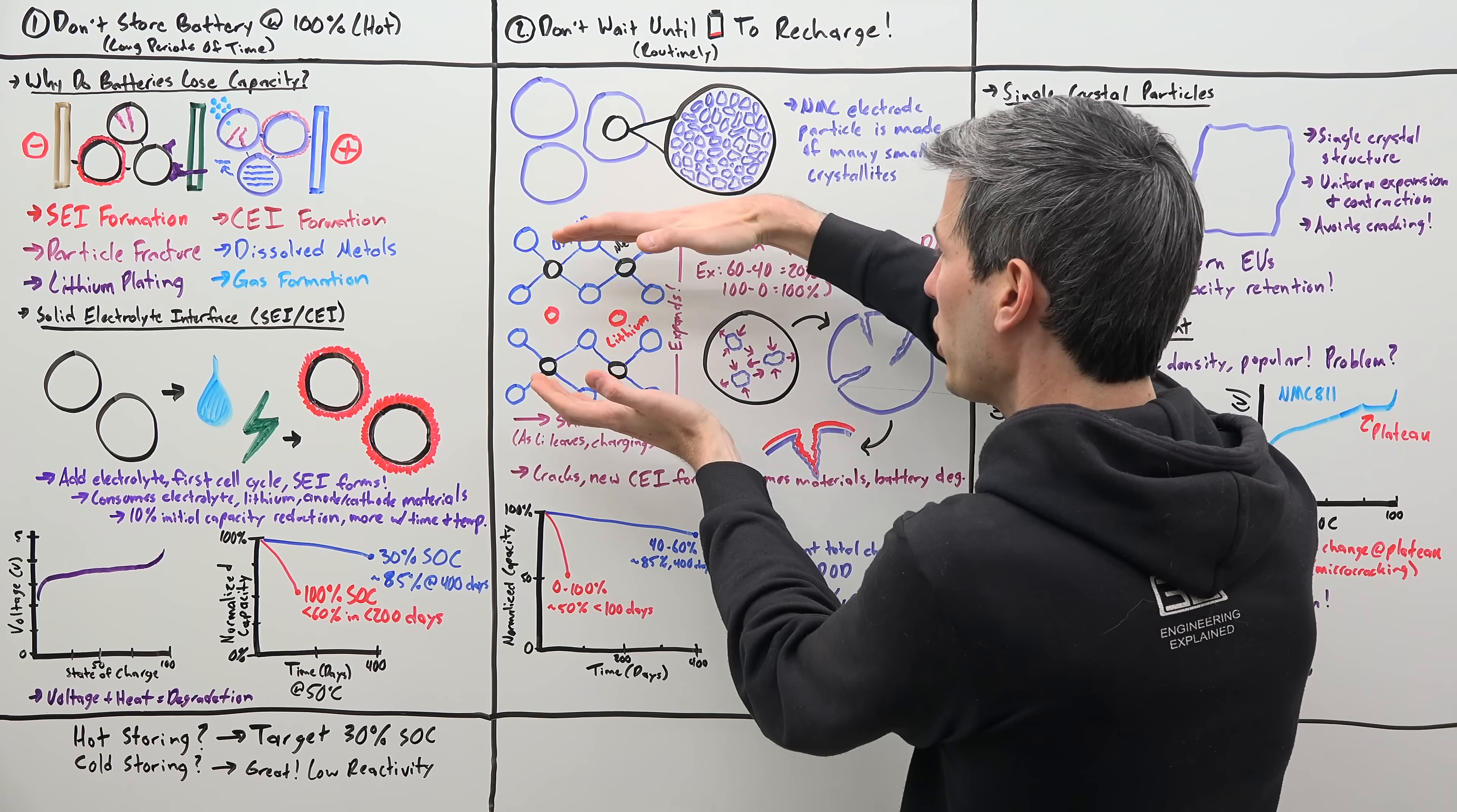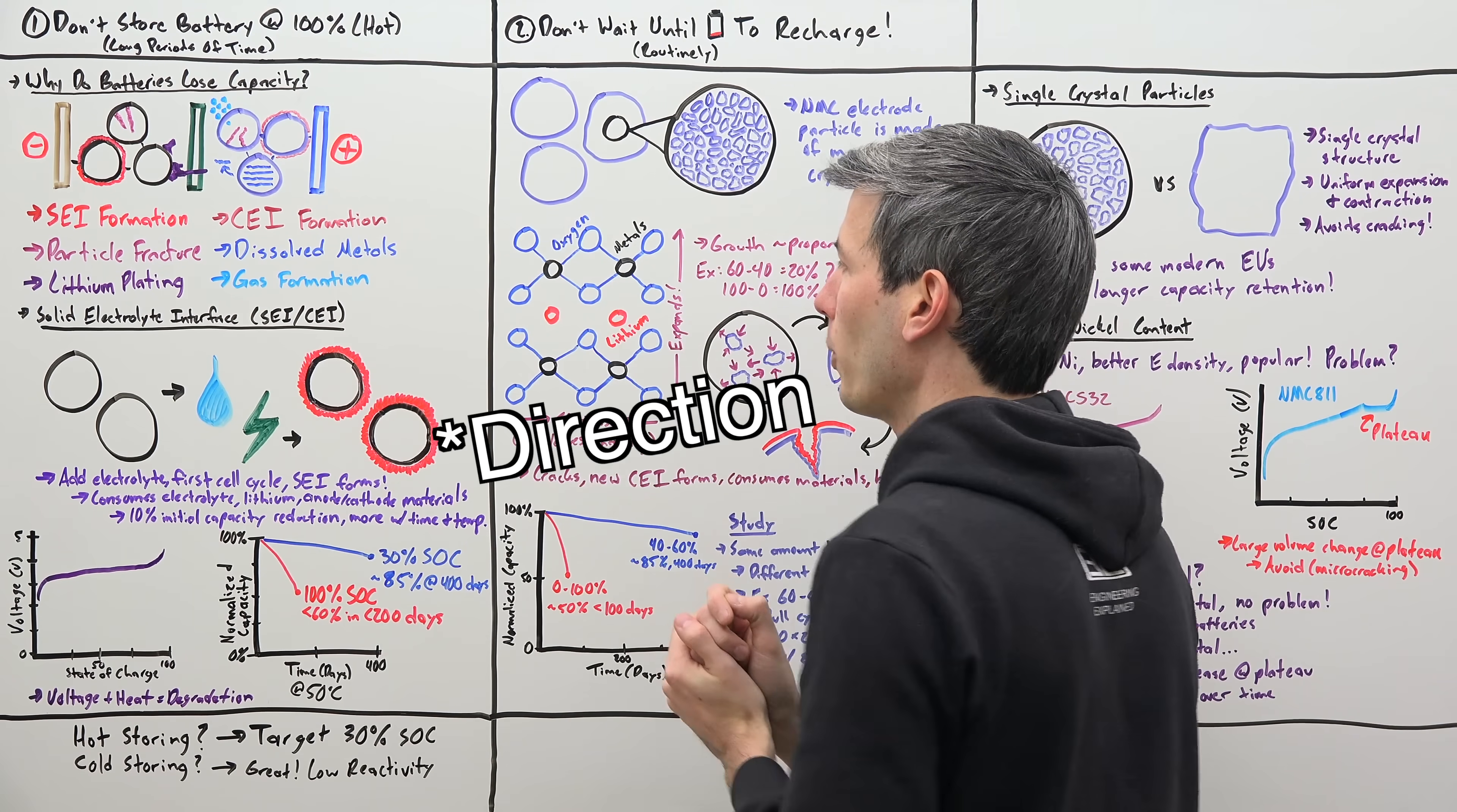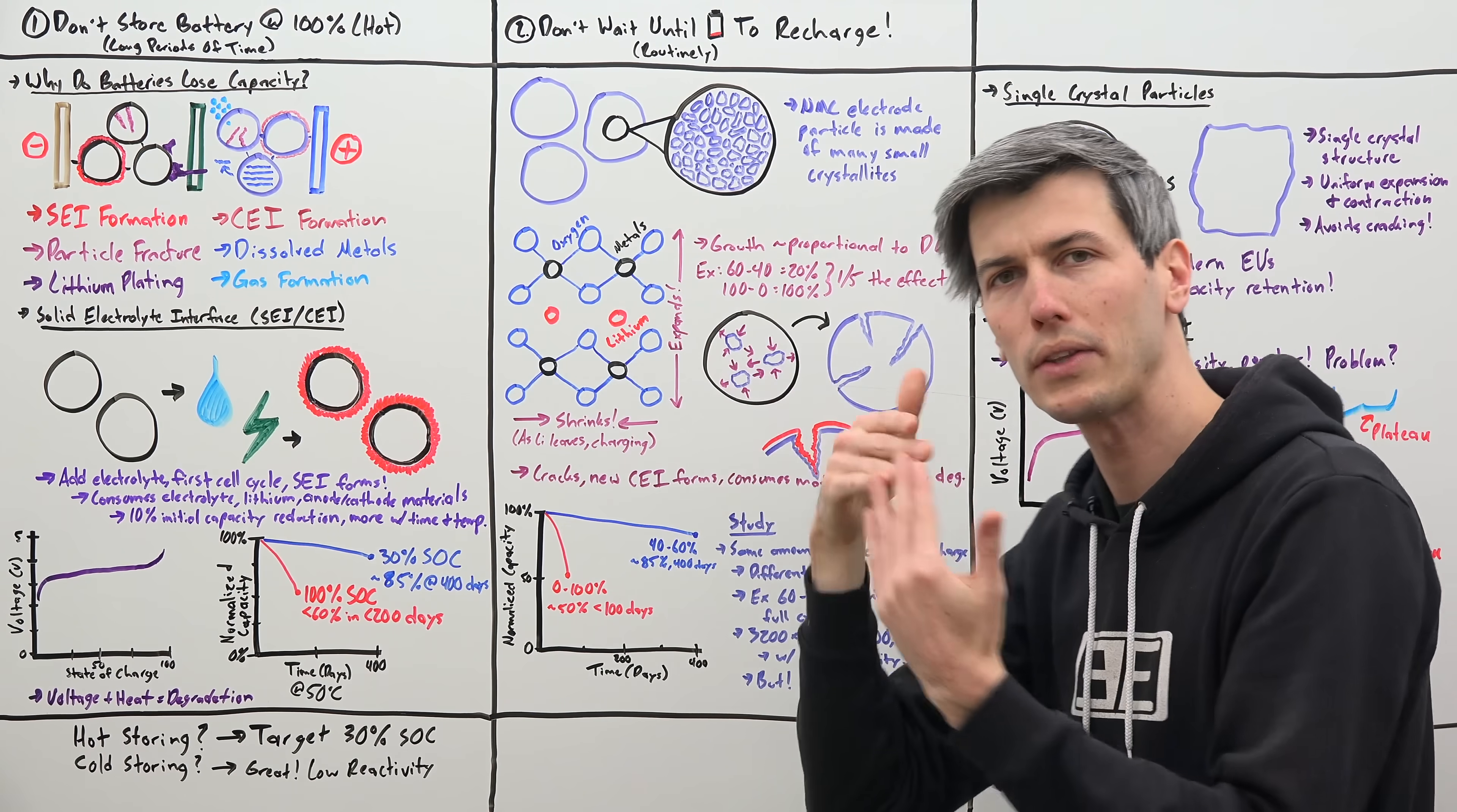And so as this lithium leaves this crystal structure, this formation expands in one direction and it shrinks in another formation. And the orientation of these are all over the place. So you've got a bunch of different crystals, all with different orientation,